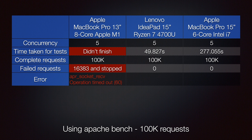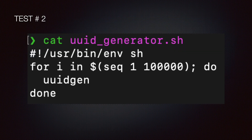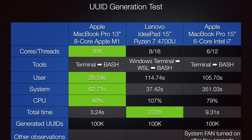So let's try with Bash. In the second test, I'm running a simple Bash script that generates 100K UUIDs. I'm using uuidgen, which directly runs on the machine and utilizes the system kernel — not a programming-language-specific utility. Apple M1 did a great job here. Apple M1 has eight cores and it processed all the requests in 3.24 seconds while maintaining the CPU at just 40 percent.